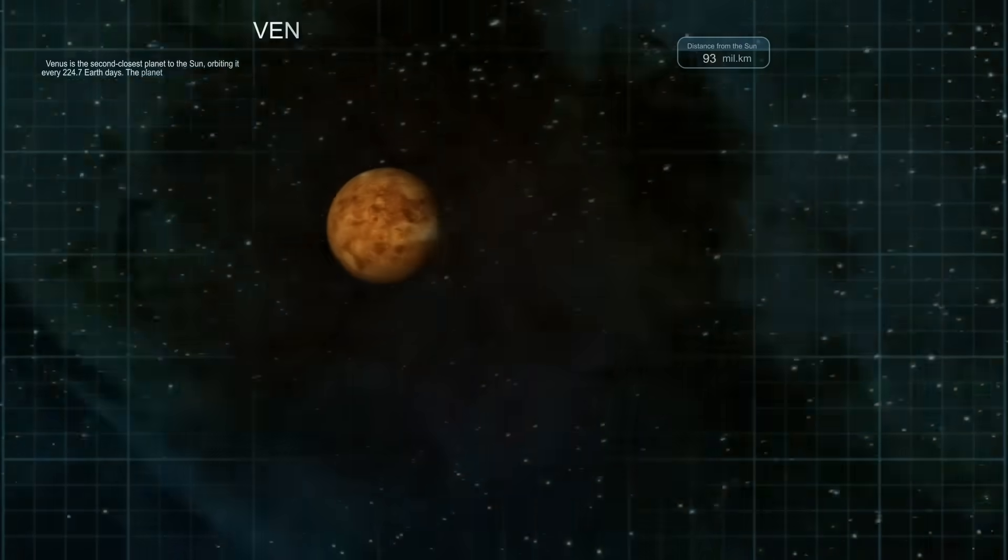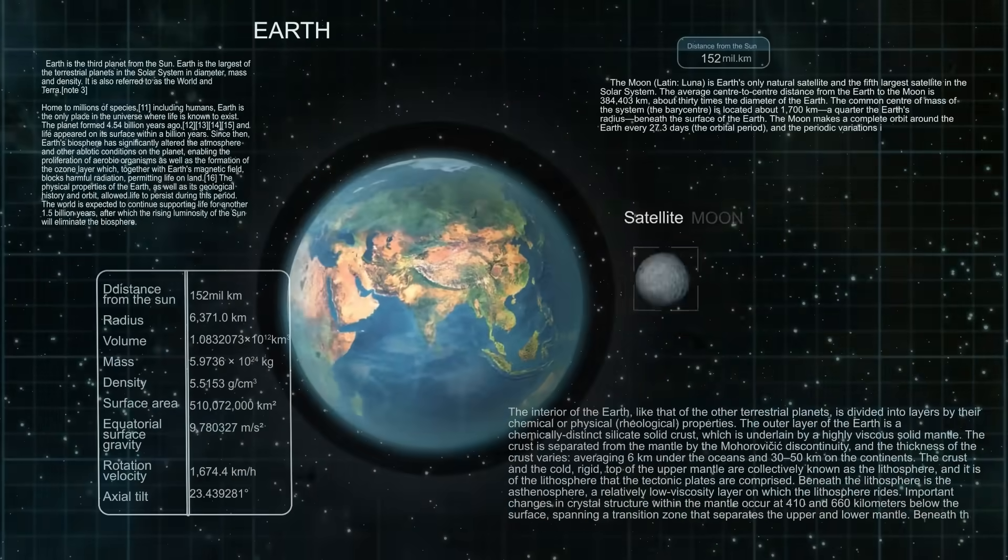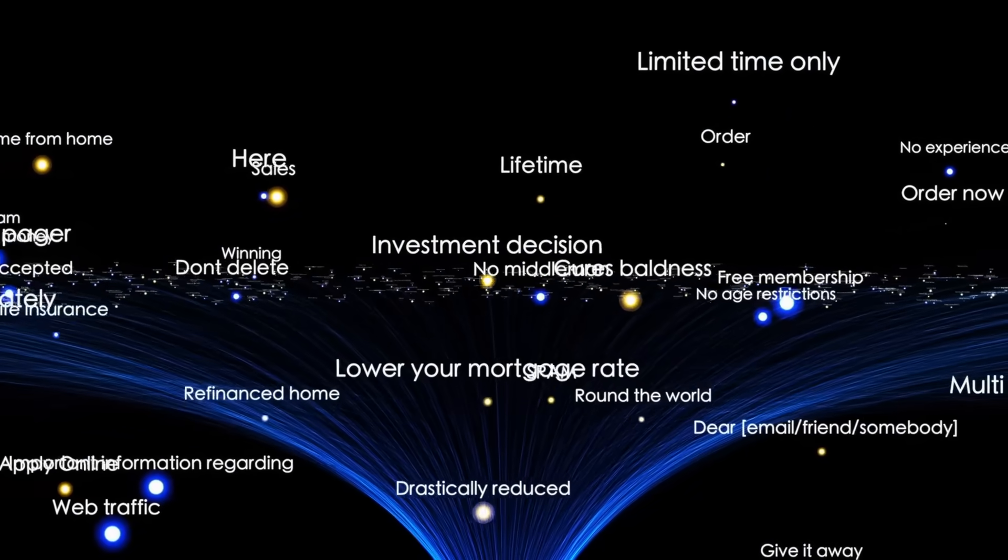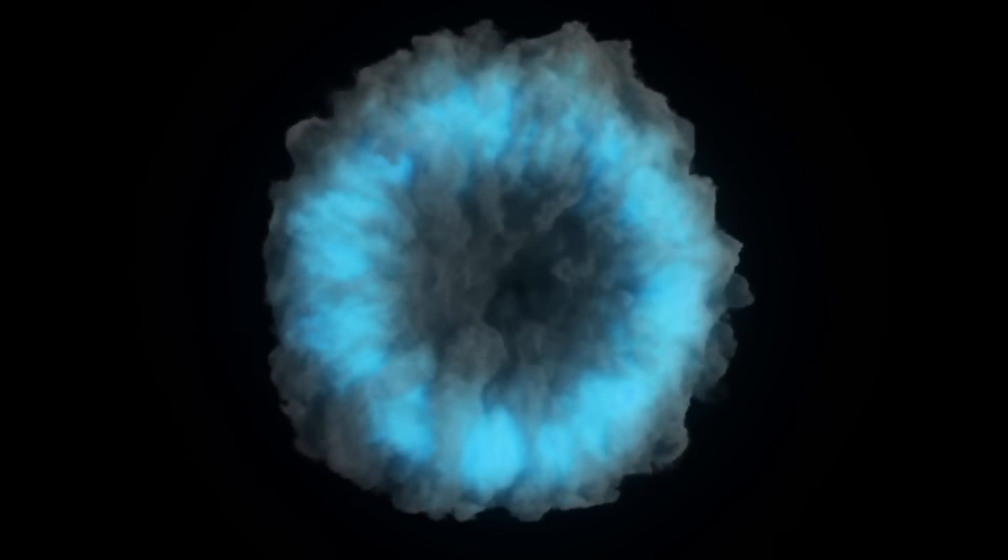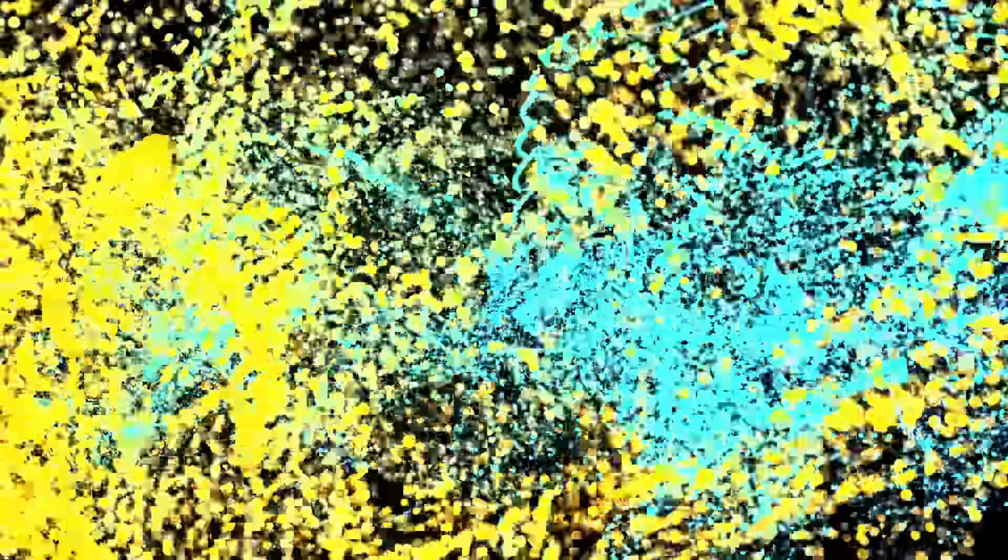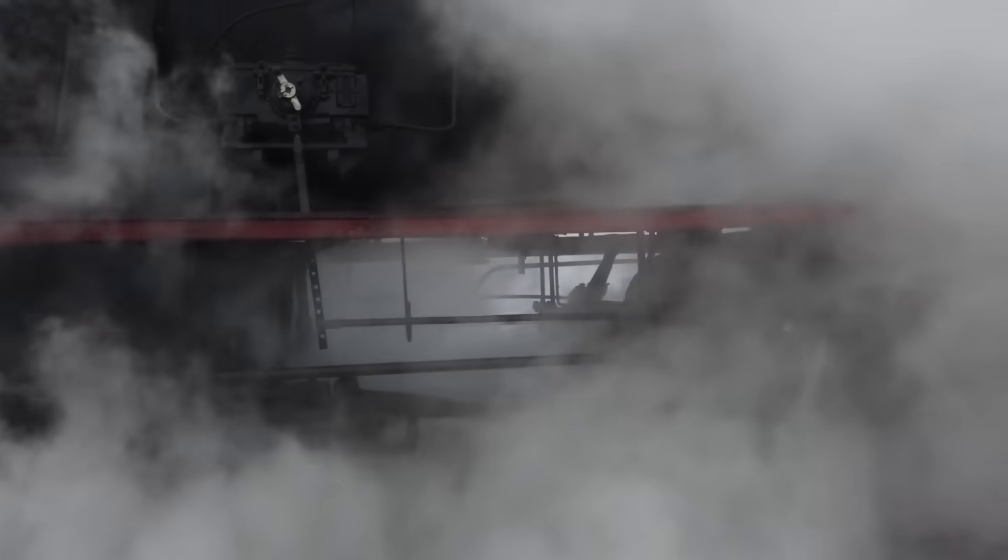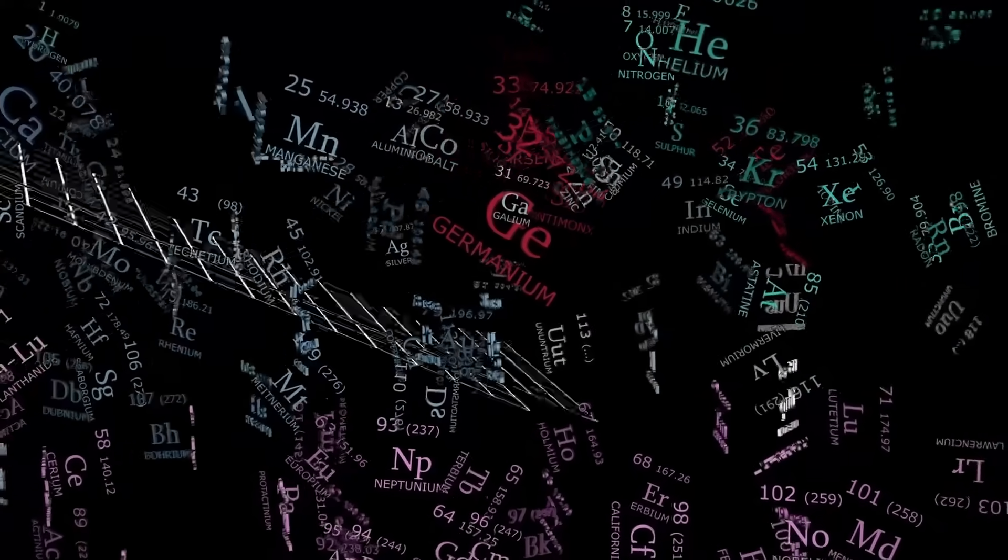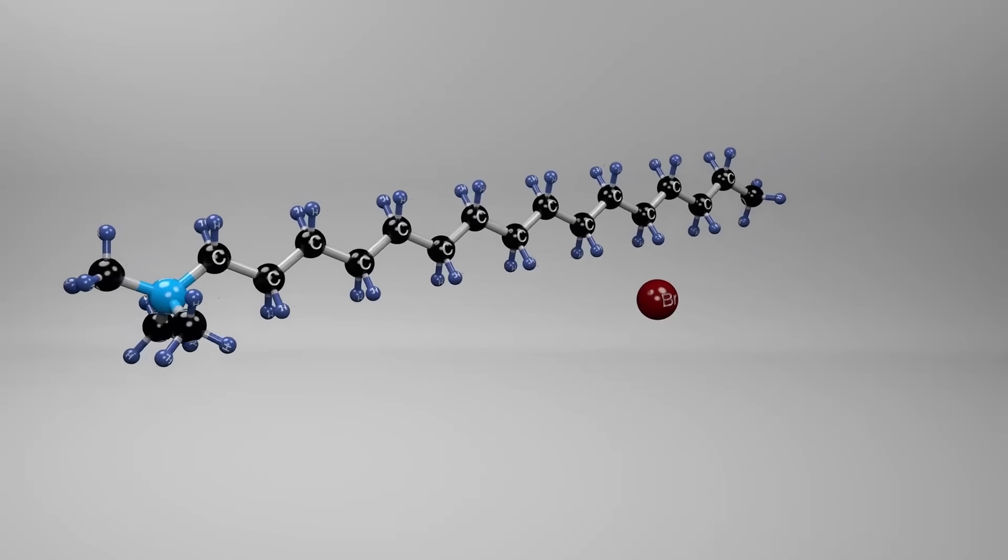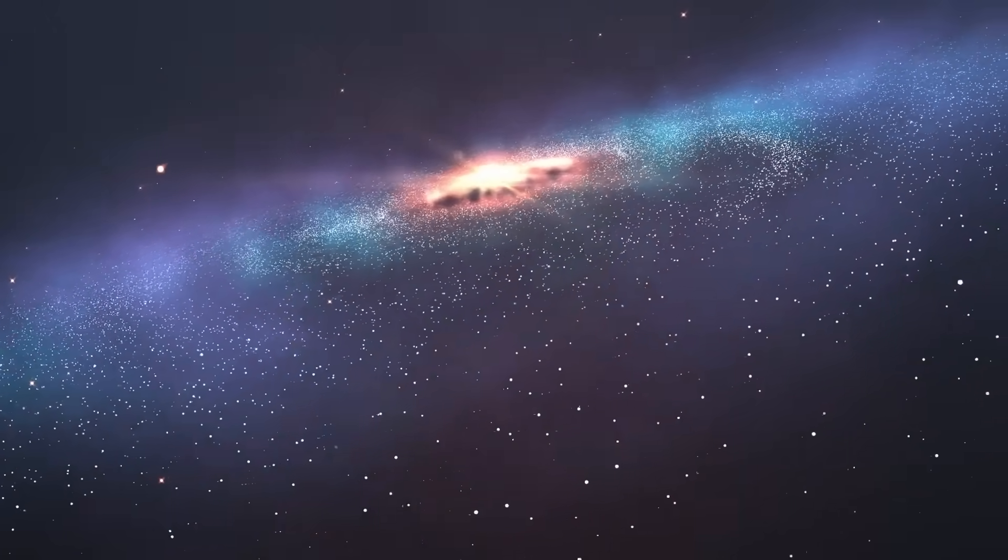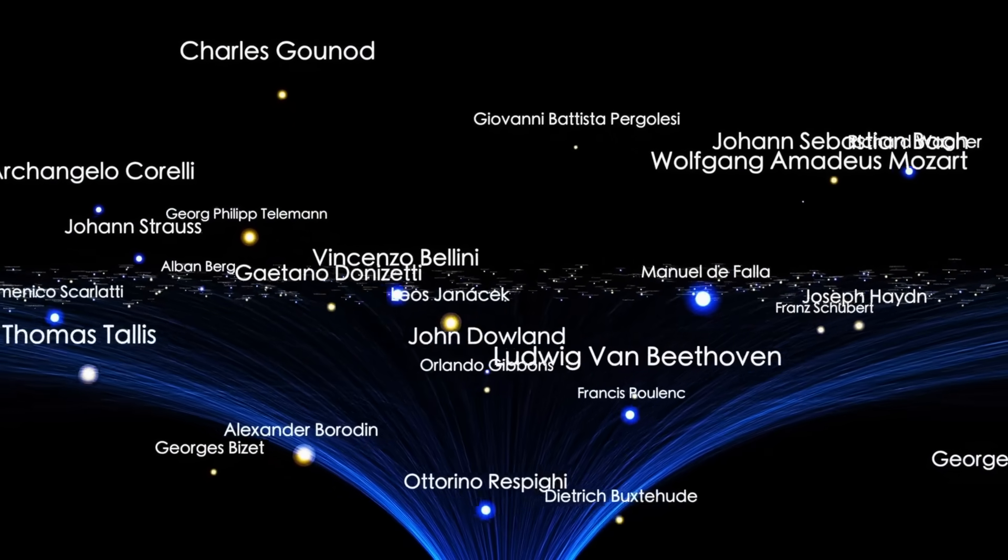As global observatories recalibrated their instruments to follow 3AI Atlas with maximum precision, a disturbing new measurement emerged. Gravitational lensing effects around the object weren't matching its estimated mass. In fact, the curvature it created in surrounding space implied the presence of something much denser, or more precisely, something capable of manipulating gravity fields. This broke every model astrophysicists rely on to predict motion and interaction between celestial bodies. The only time we've seen anything remotely similar. Black holes. But 3AI Atlas isn't a collapsed star. It's smaller than a moon. So how is it warping space around itself? Some theorists proposed it was using localized gravity control, not as propulsion, but as a navigation system, like a submarine adjusting ballast to glide silently through an alien ocean. This would mean we're not just dealing with advanced engineering. We are dealing with physics that has been conquered and mastered, not studied.